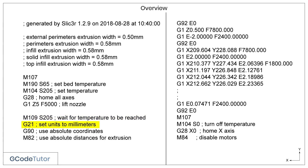Before we start adding any measurements to our program, we use G21 to tell the machine that we are using millimetres and not inches. If we were going to set the machine to read in inches, we would use the G-code G20. For more information, look at the lesson on G20 and G21 metric or imperial systems.